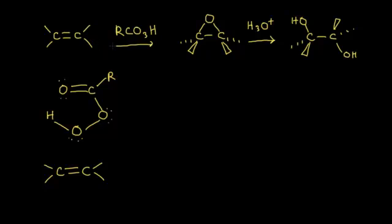You start with an alkene and add to that alkene a percarboxylic acid, you will get an epoxide. This is an epoxide, which is where you have oxygen in a three-membered ring with those two carbons. You can open up this ring using either acid or base catalysis, and we're going to talk about acid-catalyzed reaction in this video.